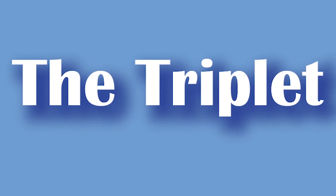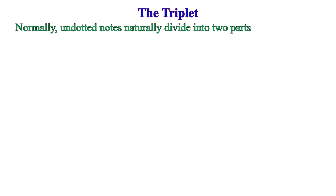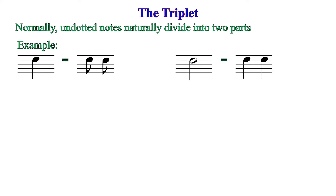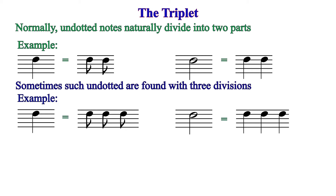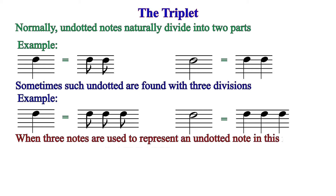Let's start by discussing the triplet. Normally, undotted notes naturally divide into two parts. For instance, a quarter note will divide into two eighth notes, and a half note will divide into two quarter notes. Sometimes, however, such undotted notes are found with three divisions — a crotchet or quarter note will divide into three eighth notes, and a minim or half note will divide into three quarter notes. When three notes are used to represent an undotted note in this manner, the three notes are called triplets.